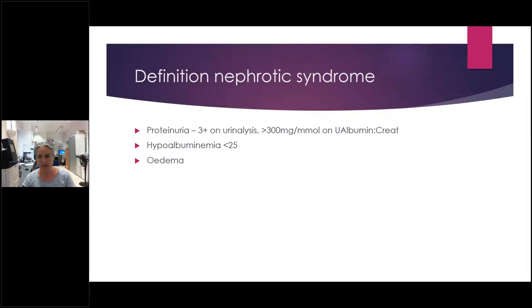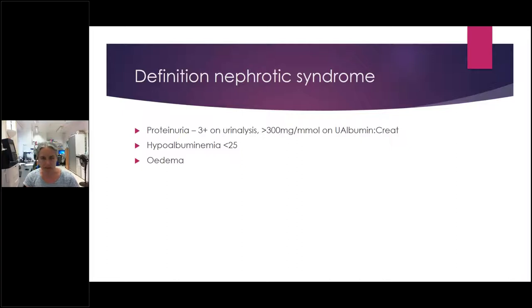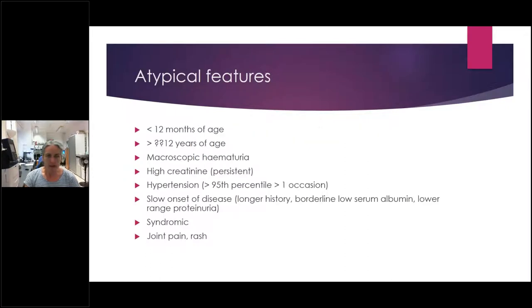When we talk about it in the context of childhood nephrotic syndrome, we talk about it being idiopathic — almost a diagnosis in and of itself — usually because there isn't anything else causing it, whereas in adults there's often another cause. Some atypical features are really important to consider: is something else causing that nephrotic syndrome, or is it just idiopathic?